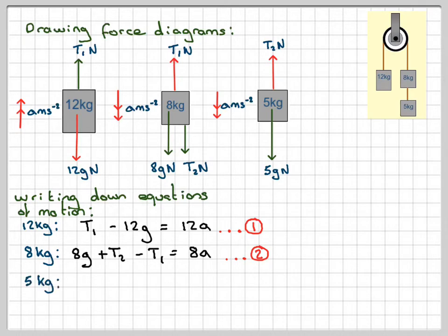And then finally, for the 5 kilogram block, we're going to have 5g Newtons minus T2 is equal to ma, which is 5 times a. We've got equation 3.